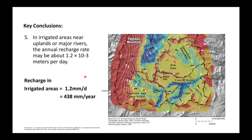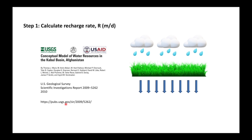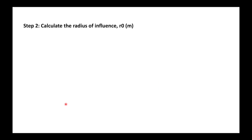The USGS also made a groundwater flow model and estimated that in irrigated areas recharge due to irrigation is 1.2 × 10⁻³ meters per day — that's 1.2 millimeters per day or 438 millimeters per year. So we now have a number we can use: R = 0.0012 meters per day.